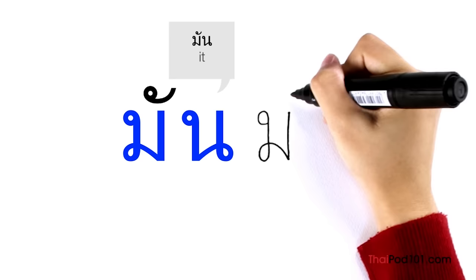Let's practice writing man: Maw Maa, Mai Han Akat, Naw Nu — man. The other short vowel is Sara I (short), which makes the sound I like the Y in 'happy.' Sara I goes above a consonant just like the long vowel Sara II — the only difference is Sara I doesn't have a vertical line.